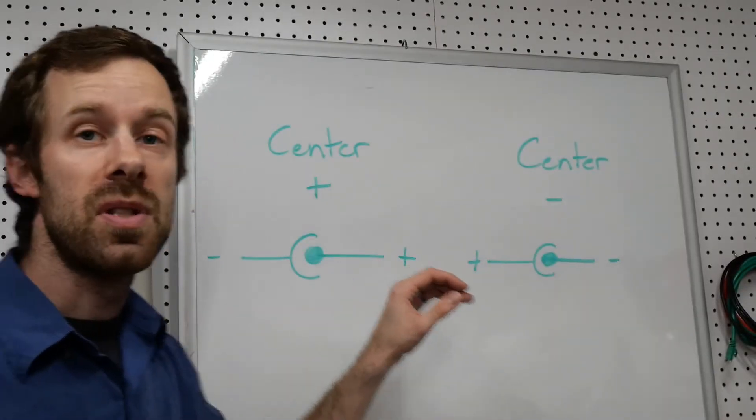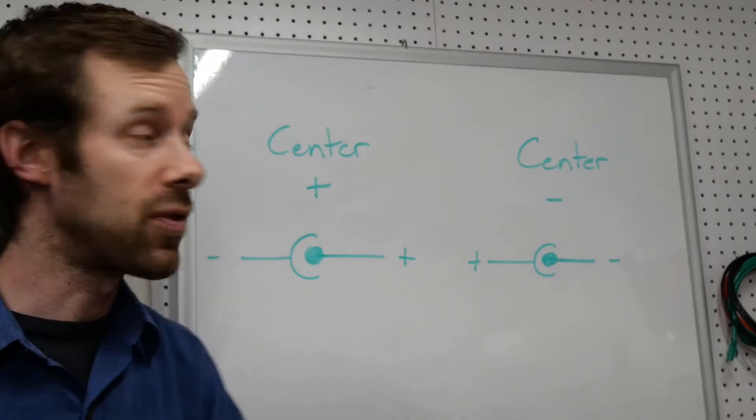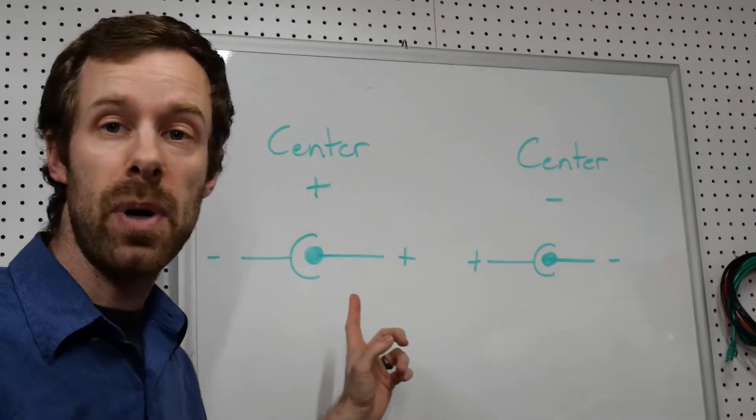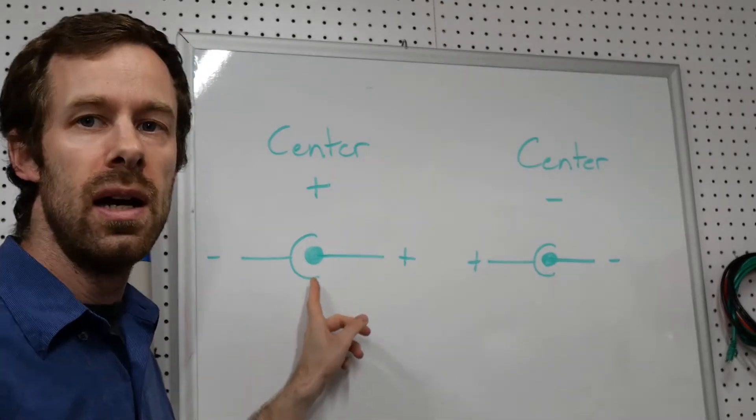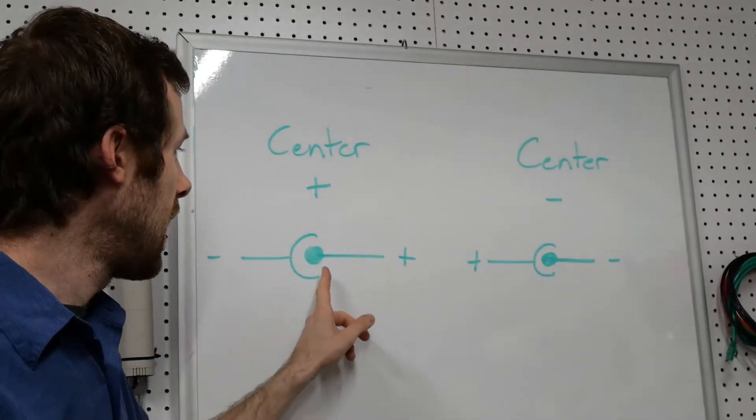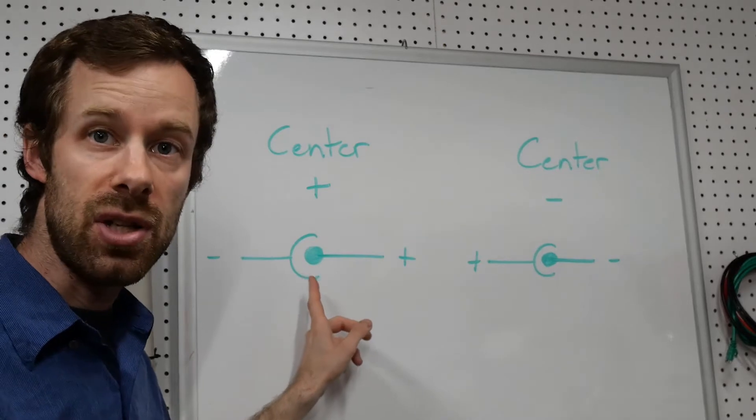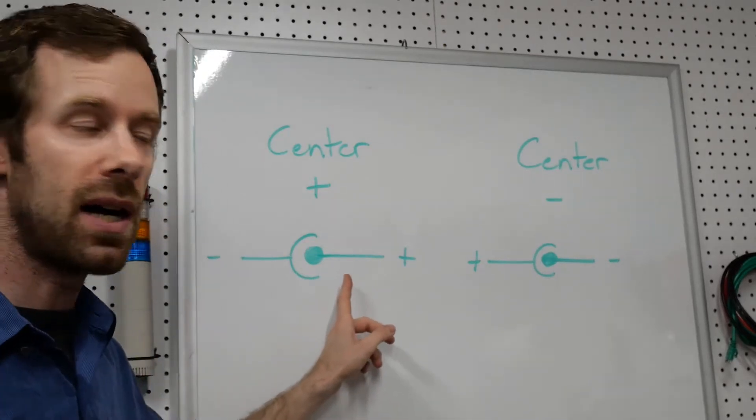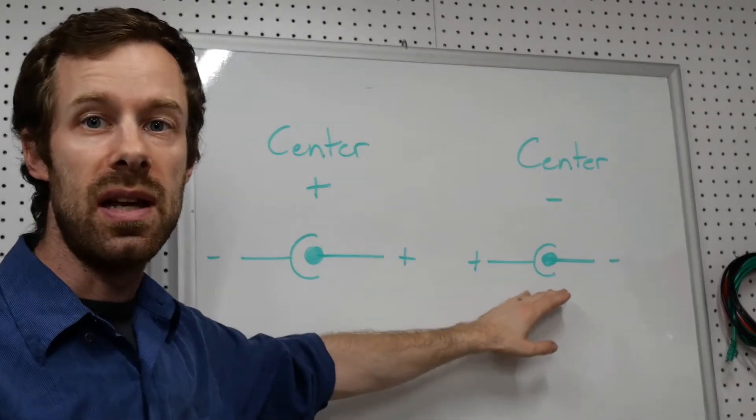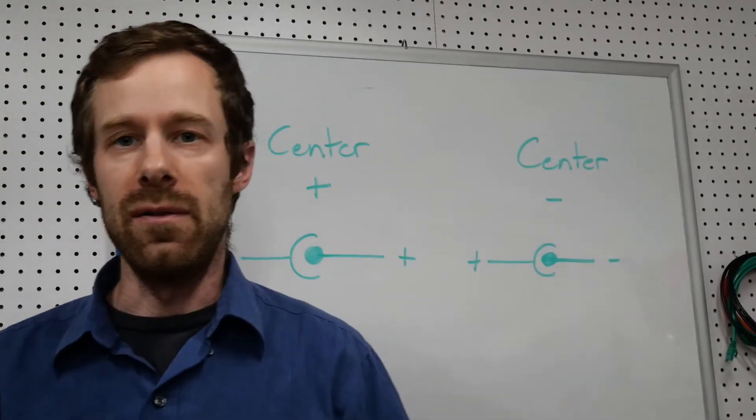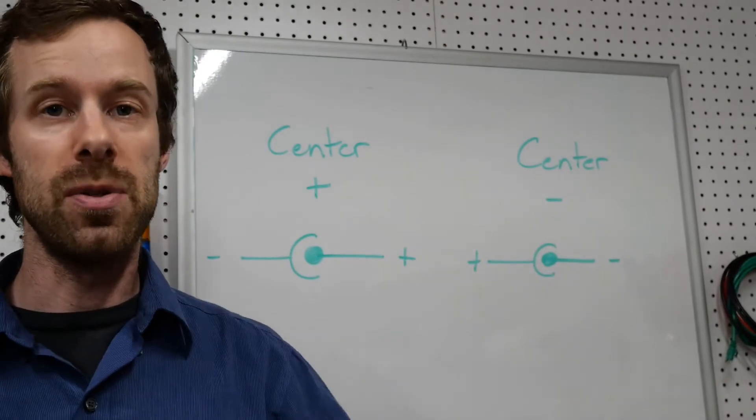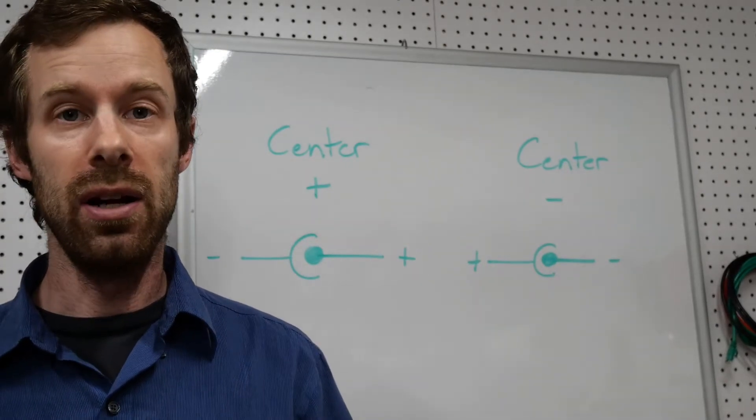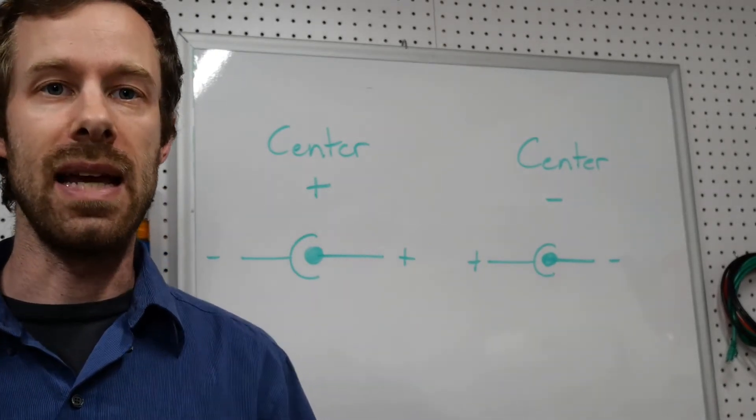So here's what those two symbols look like and we don't want to get this wrong. Like I said center positive is the majority of them these days and you'll see a symbol where it shows an outer shell and the inside of that is connected to a dot with a plus. Center positive. Now this one is center negative. You can choose the right voltage. You can choose the right current but if you connect the battery terminals backwards like in a car you're going to do some serious damage.